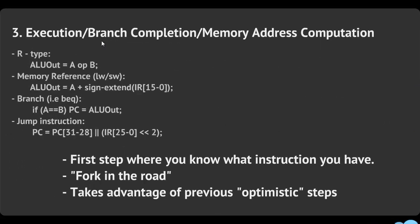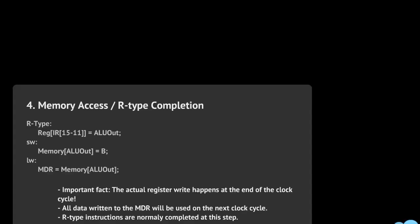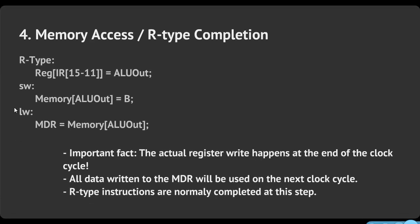At the end of this step you know where you are — you've used the optimistic pre-computations from before to help you. Branch and jump are now done, but R-type, load word, and store word still remain, so we move on to step four.